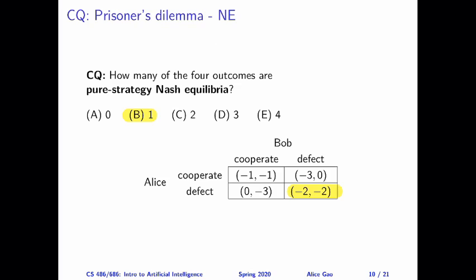In this question, we wanted to characterize the pure strategy Nash equilibrium of prisoner's dilemma. The correct answer is that there is only one pure strategy Nash equilibrium, and that is defect, defect.